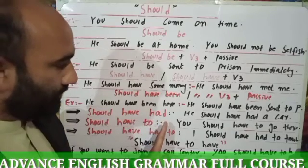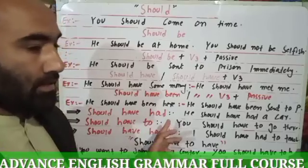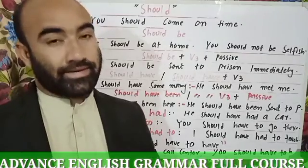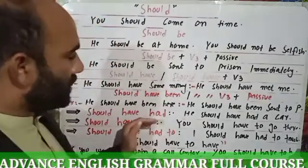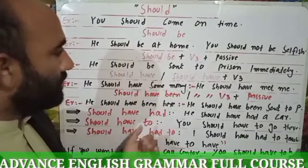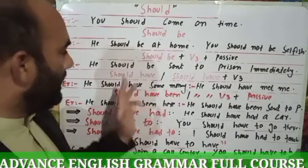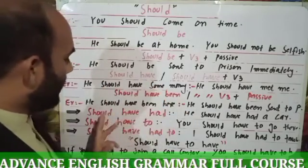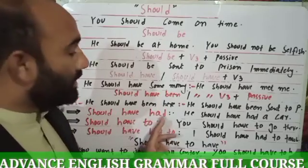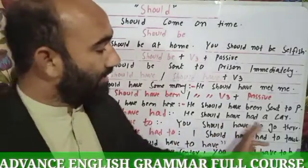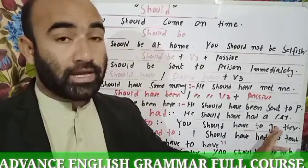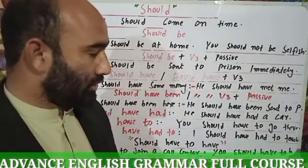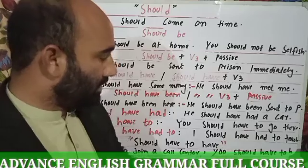SHOULD HAVE HAD. We are talking about the past — the past property, the past relationship, or past ownership. Whenever we are talking about that, we use the word SHOULD HAVE HAD. We use SHOULD HAVE for the present — 'He should have some money' — and SHOULD HAVE HAD for the past — 'He should have had a car.' We are talking about an opinion. Here HAD is the main verb.